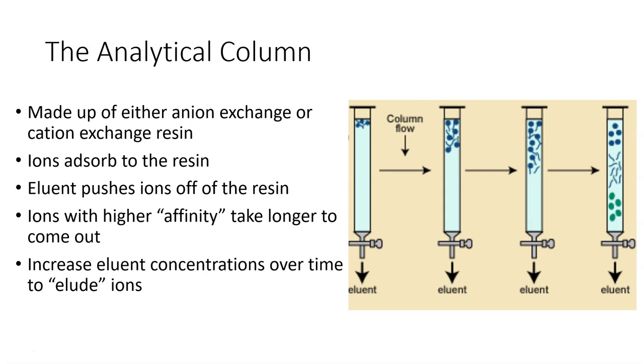And this has to do with the ion's charge, its size, its electronegativity, and some other things. But basically the harder something is stuck to that resin, the longer it's going to take to come out. And this allows us to separate out these ions so that the conductivity can measure each ion individually. Based on the time that it took for the ion to come off, we can tell which ion was which.